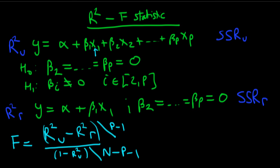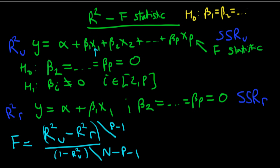When we use statistical software, normally if we just run this original regression it will already give us an F-statistic. What does that actually mean? What it's testing with that F-statistic is the null hypothesis that beta 1 equals beta 2 equals beta p equals 0. So we're testing to see whether all of our independent variables, with the exception of the constant, have effects equal to 0 — testing for insignificance of all the independent variables.